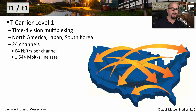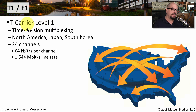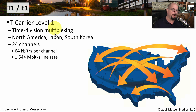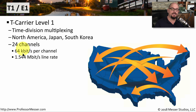Some of the more traditional wide area network connections may be brought in over a T1 or an E1 line. T1 stands for T Carrier Level 1, and it's a way to connect two locations using time division multiplexing. T1 is commonly implemented in North America, Japan, and South Korea. There are 24 channels on a T1 line, and each channel can support 64 kilobits per second, for a total line rate of 1.544 megabits per second.